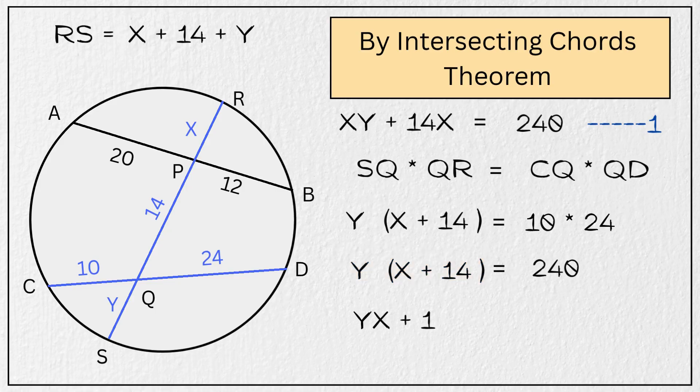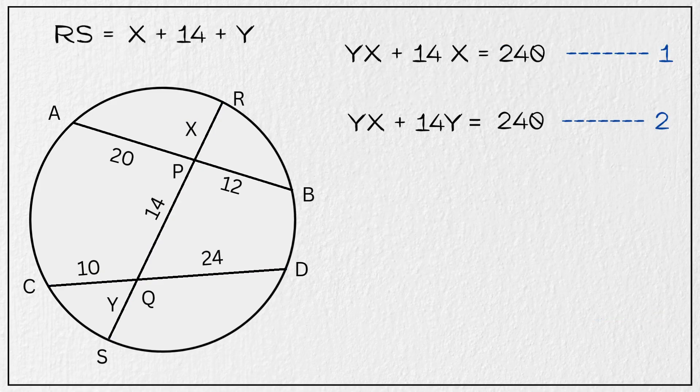So now we have Y times quantity X plus 14 is equal to 240. Expanding this gives us YX plus 14Y is equal to 240. Let's call this equation 2. Did you notice something? Both equation 1 and equation 2 are exactly the same in structure and have the same result. That means X must be equal to Y, correct?